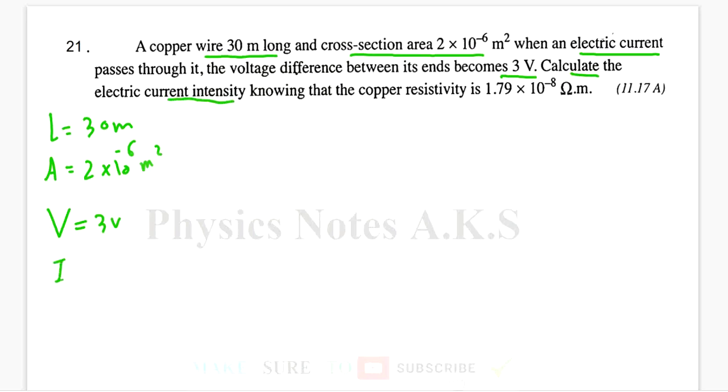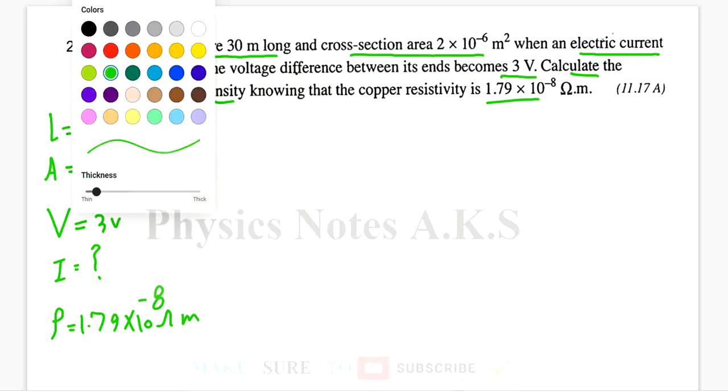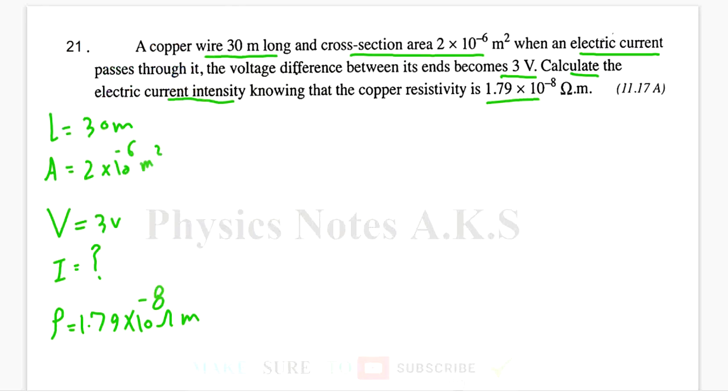Knowing that the copper resistivity is 1.79 × 10^-8 ohm-meter. So, they want me to find the electric current. I know from before that R equals V over I, which means that I equals V over R. So, first I find the R, since I have the V, but I don't have the R. So, let's find the R from another formula, which is rho L over A.